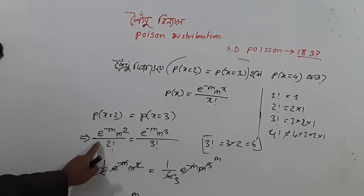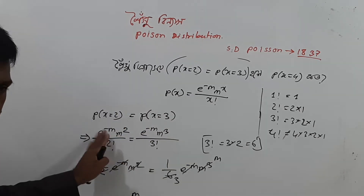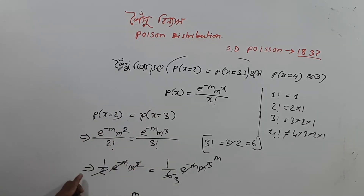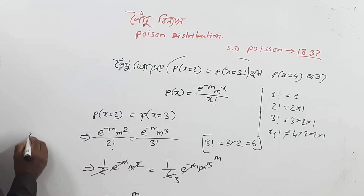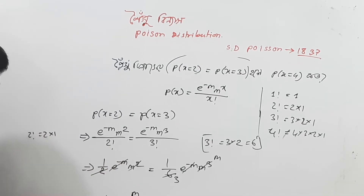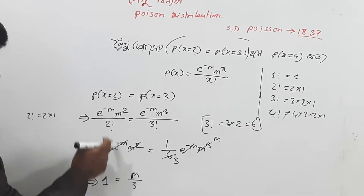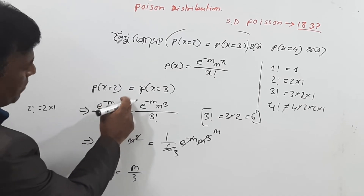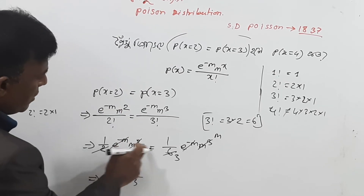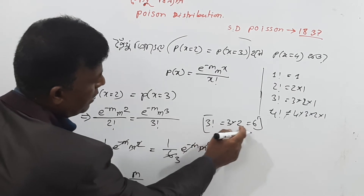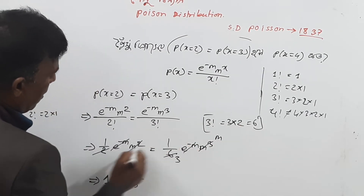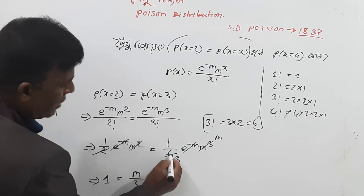The formula is A. Now the formula is 2 factorial. So the formula is A. Now the two factorial is 2 factorial. This is 3.